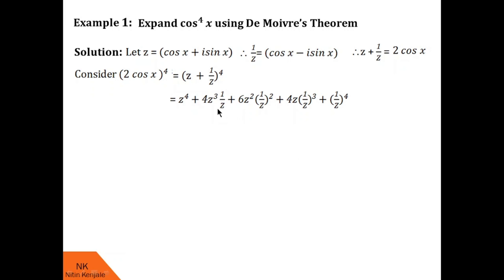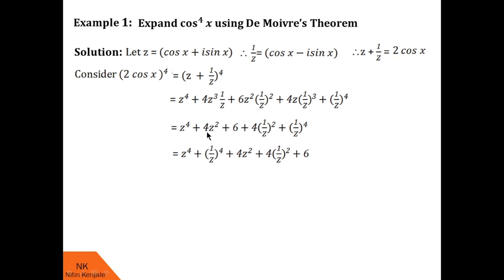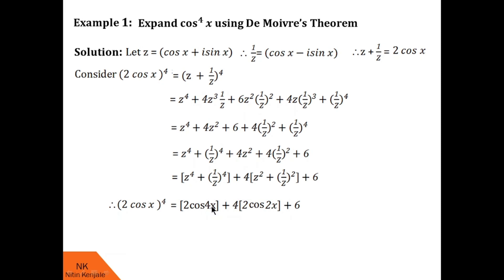Now let us see if there are any cancellations. Yes, there are. z cube upon z becomes z square; z square upon z square cancels; z upon z cube becomes 1 by z square. After cancellations, we have a simplified expression. Now let us combine terms with similar degree: the first and last terms have the same degree, and the second and fourth terms have the same degree. Using the prerequisite formula, z raised to 4 plus 1 by z raised to 4 is replaced by 2 cos 4x, and z square plus 1 by z square is replaced by 2 cos 2x. So 2 cos x whole raised to 4 equals 2 cos 4x plus 4 times 2 cos 2x plus 6.